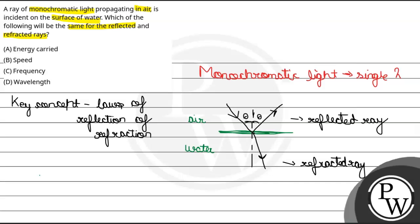तो यह जो चारो चीज़ें हमें निकालनी है, उसके लिए हम लोग देख लेते हैं। Air और water — सबसे पहले, हमें पता है कि air में जो speed होगी इसकी, वो अगर c है, तो water में speed हो जाएगा c upon mu, जहाँ mu water का refractive index है। तो speed तो हमारा same नहीं होगा, तो speed cancel हो गया।